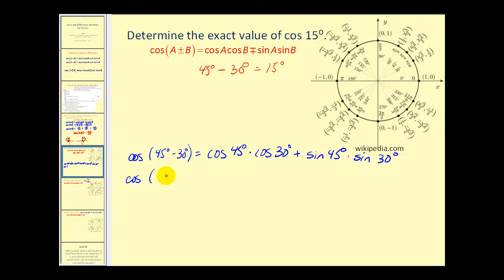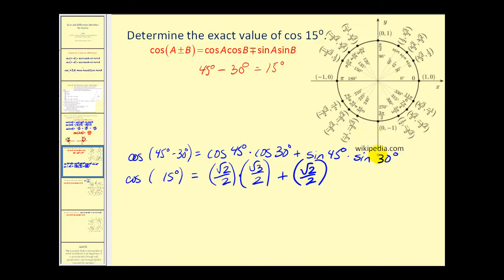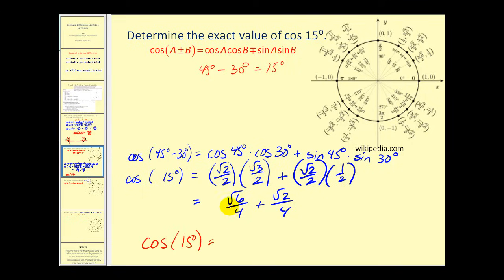Replacing with 15 degrees and using the unit circle: cosine 45 degrees equals square root two over two, times cosine 30 degrees, which is square root three over two. Plus sine 45 degrees, also square root two over two, times sine 30 degrees, which is one-half. This gives us square root six over four plus square root two over four. So cosine 15 degrees equals the square root of six plus the square root of two, divided by four.